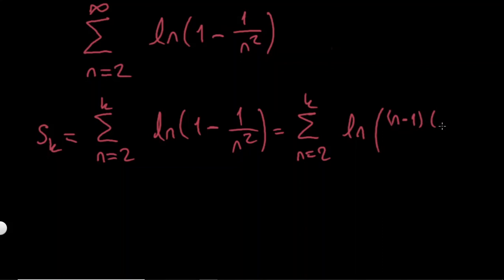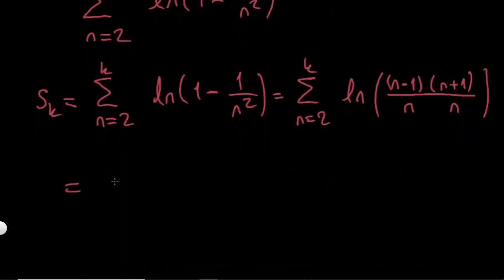n minus 1, n plus 1 over I have n squared. Let's write it like this and kind of group them. I'm just writing this sum, n goes from 2 to k. I can write all of the ones at the numerator as plus and all of the ones at the denominator as minus. Let's say ln n minus 1 minus ln n.